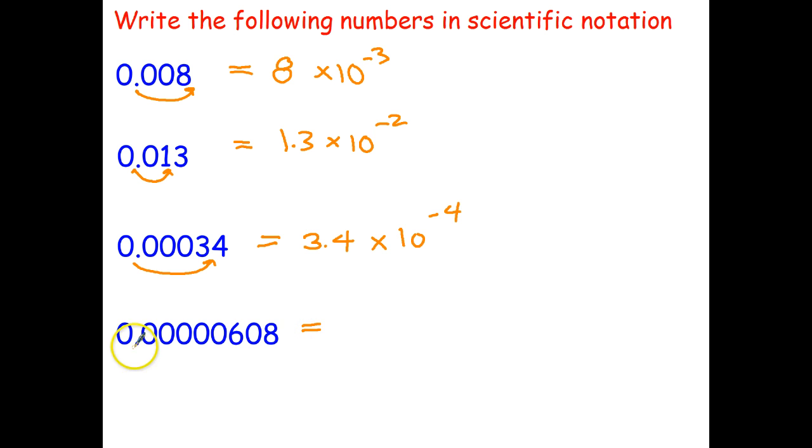And the last one, I'm moving the decimal point between the six and the zero following it, so 6.08 times 10 to the power of 1, 2, 3, 4, 5, 6—10 to the power of negative 6. And if you like to use the counting zero method, you go 1, 2, 3, 4, 5 zeros in front of the six and add one more to get 10 to the negative 6.